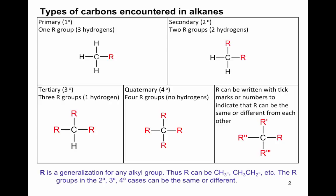Classifying carbons has to do with how many R groups are attached to that carbon. In a primary carbon, one R group is attached. In a secondary carbon, two R groups will be attached. In a tertiary, three R groups are attached. And a quaternary will have four R groups attached. R is a generalization for any alkyl group, any size.